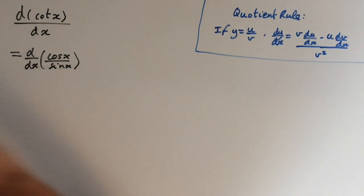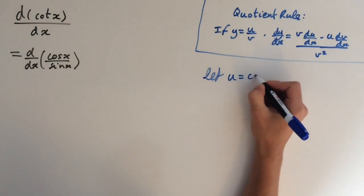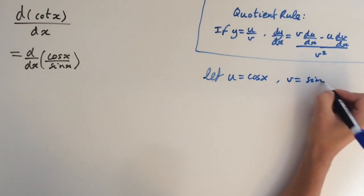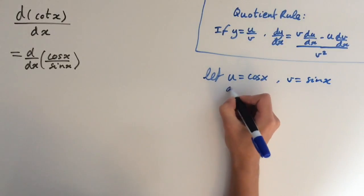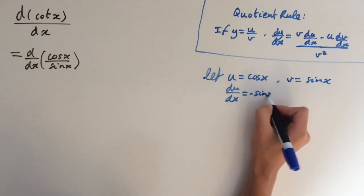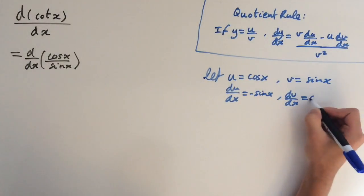And now we have to use the quotient rule. So we're going to let u equal cos x and v equal sin x. So now du/dx equals minus sin x and dv/dx equals cos x.